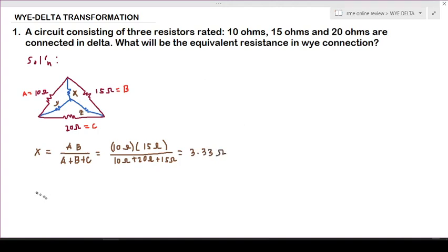Then we go to Y. Y equals the product of the adjacent resistances A and C, so A times C over A plus B plus C. We substitute: 10 ohms times 20 ohms over 10 ohms plus 15 ohms plus 20 ohms.